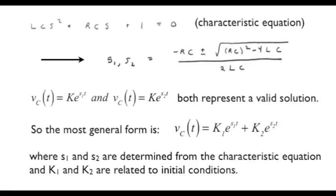Mathematically, both s1 and s2 are valid solutions of the equation obtained from KCL, KVL, and element constraints, so either solution would satisfy our circuit requirement. The most general form of the answer can be written as a weighted summation: the capacitor voltage equal to k1 e to the s1t plus k2 e to the s2t.